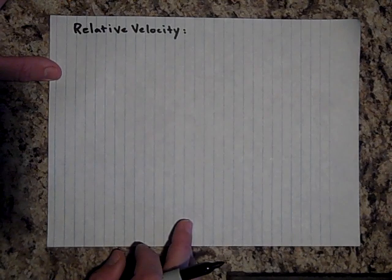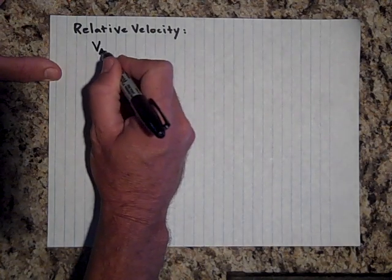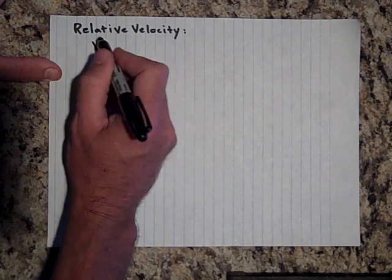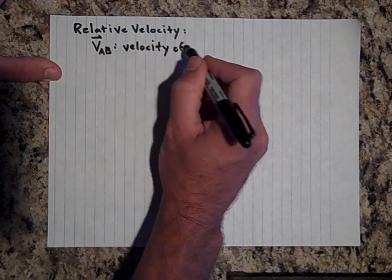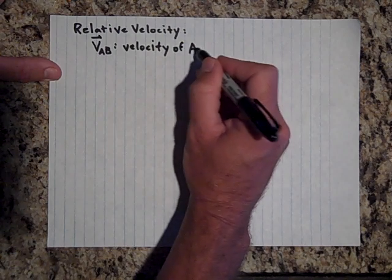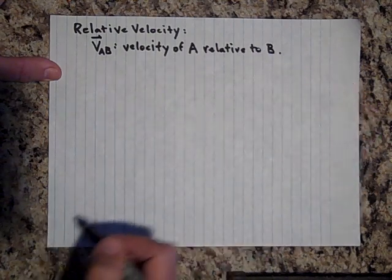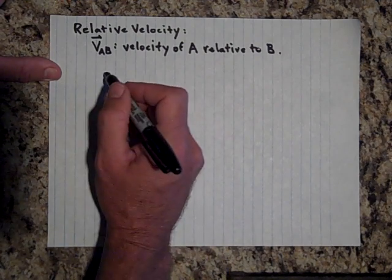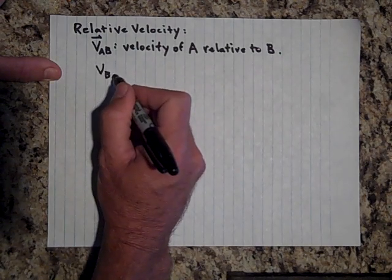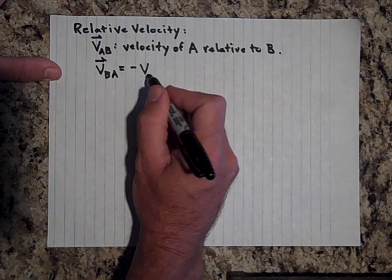Let me first tell you the notation for relative velocity. If I want to know the velocity of object A relative to object B, we write it like that, and we put a vector arrow because velocity is a vector. This is the velocity of object A relative to B. It turns out that if you want to know the velocity of object B relative to object A, it will be just the opposite — the velocity of B with respect to A equals the negative of the velocity of A with respect to B.